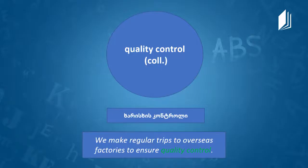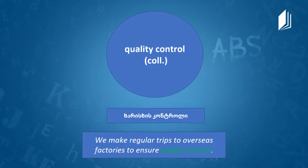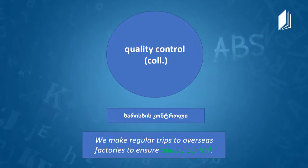The next word is quality control. Quality control is a collocation and also a noun — the process of monitoring that the quality of products or goods is good and produced to a certain standard so that your brand is maintained. Example: 'We make regular trips to overseas factories to ensure quality control.'